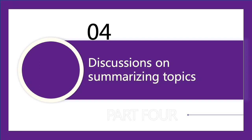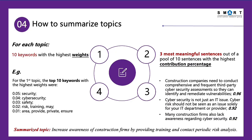Now it's time to summarize the topics into text. For each topic, we have two references: the 10 keywords with the highest weight, and the 3 most meaningful sentences out of a pool of 10 sentences with the highest contribution percentage. These are all given by the LDA model. For example, for the first topic, the 10 keywords with the highest weight are shown on the left, and the 3 most meaningful sentences are shown here. We summarize the topic as: increasing awareness of construction firms by providing training and conducting periodic risk analysis.